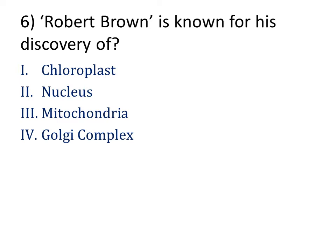Robert Brown is known for his discovery of? Our answer is the Nucleus. Scottish botanist Robert Brown was responsible for discovering the nucleus of the cell. He is also known for his description of continuous motion of minute particles in solution, which came to be called Brownian motion.